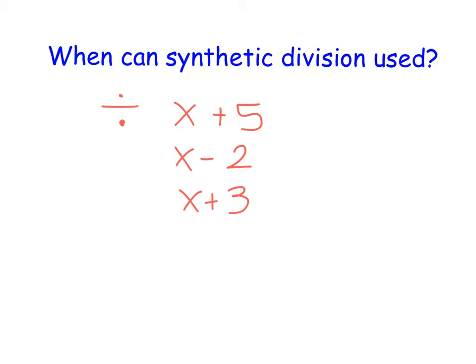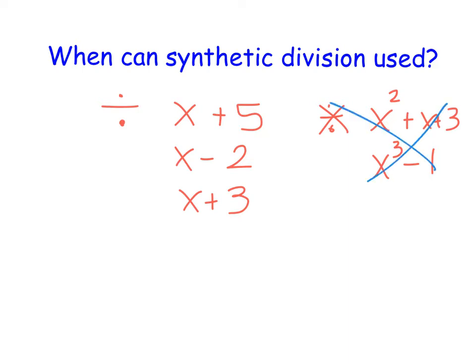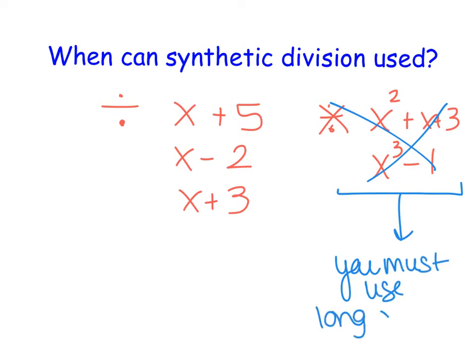The tricky part is that you cannot divide by something where x has an exponent — so something like x squared plus x plus 3, or x cubed minus 1. You can't divide by any polynomial that has an exponent on it. In those cases, you must use the long division strategy discussed previously. But if you are dividing by something that just contains an x and a constant with no exponent on that x, these are great situations where you can utilize synthetic division.